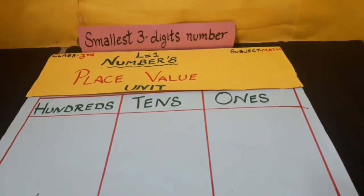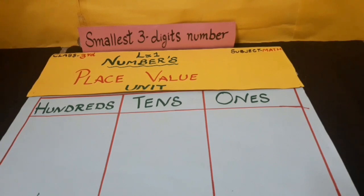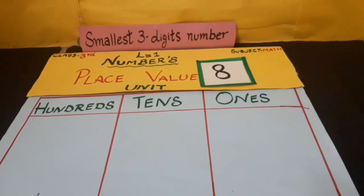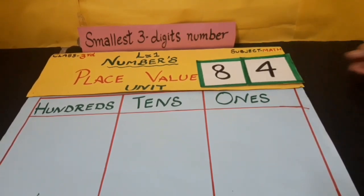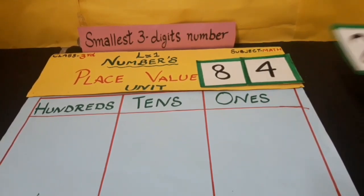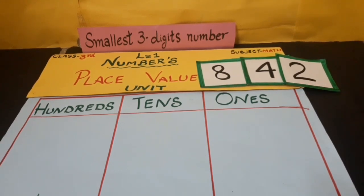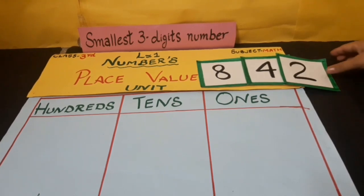Our first question is: make the smallest 3-digit number. The given digits are 8, 4, and 2. Now students, tell me, out of these 3 digits, which digit is the smallest one? It is 2.